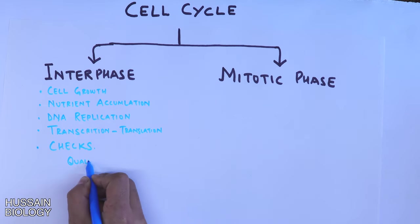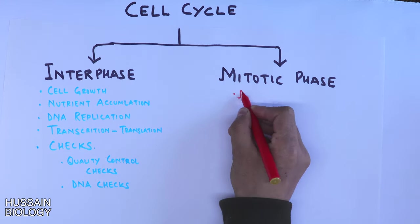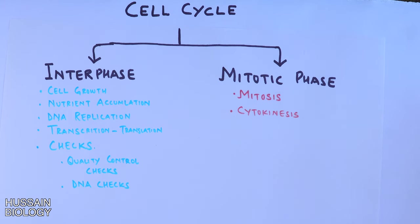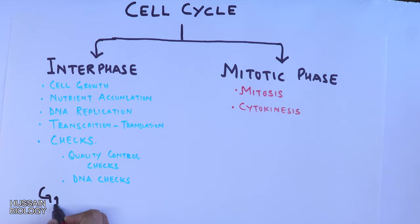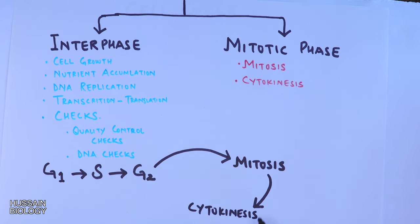In the mitotic phase or M phase, we have the mitosis of the cell, which is followed by cytokinesis, because cytokinesis is different from the M phase. In the interphase we have G1 phase followed by S phase, and then we have G2 phase. Then we jump to mitosis, which is followed by cytokinesis, and then the cycle continues.